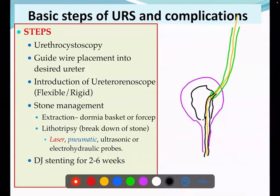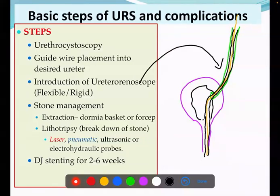The guide wire guides us to reach the desired place accurately and avoids injury — it is a lifeline. Once the scope, that is the ureteroscope, is inside — either flexible or rigid — and reaches the stone, if it is very small we can catch it by a basket or forcep and bring it out. If it is larger, we can break it by laser, pneumatic rod, or ultrasonic rod.